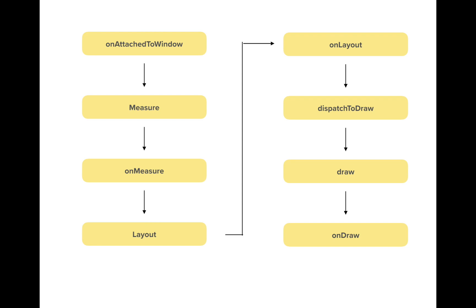Whenever we remove the custom view, there is another method — onDetachedFromWindow — that gets invoked, after which your custom view is no longer visible and your custom view does not have any window to draw its children.